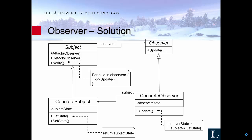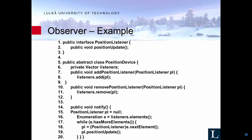The observer is notified that there is new material. It can then go and fetch that material, or if the update itself carries a parameter, you might already have the information you requested. Looking at a quick example with a positioning system: lines 1 to 3 show an interface called PositionListener with a position update method — that is the observer. The PositionDevice starting at line 5 is the subject. It has addPositionListener, removePositionListener, the vector you add and remove from, and the notify method which goes through the list and calls positionUpdate on every registered observer.